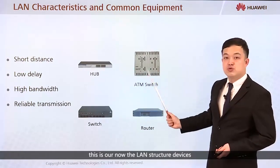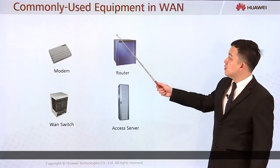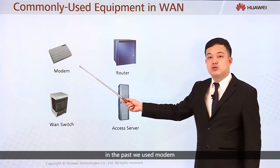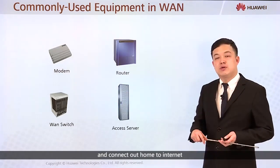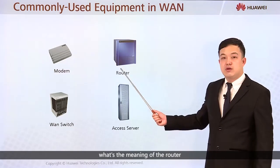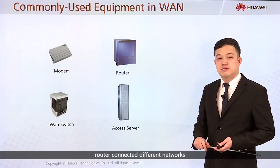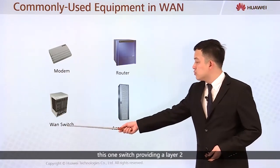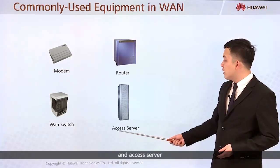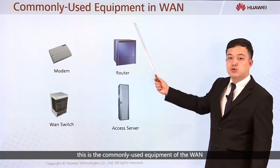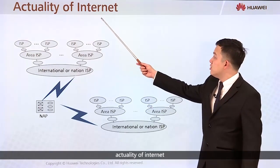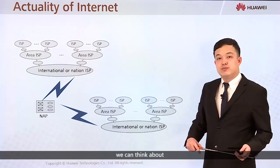These are the commonly used LAN devices. For WAN equipment, first we can think about the modem — in the past we used a modem to connect our home to the internet. The router connects different networks. One switch provides a layer-two public connection, and the DNS server is also common WAN equipment.